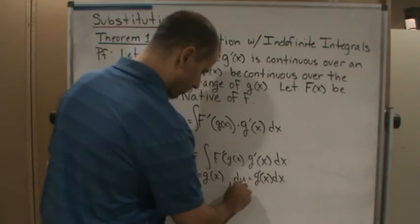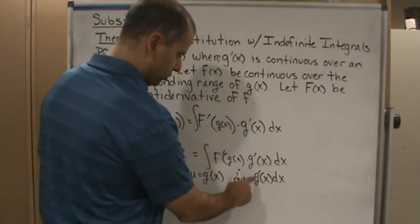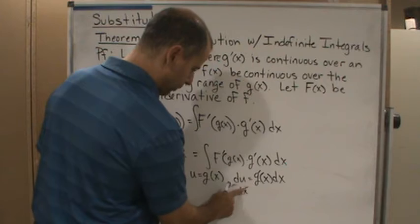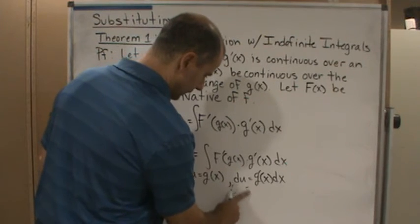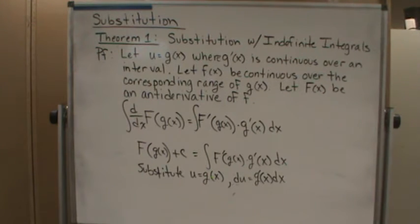Because we could write this as, remember, du/dx is equal to g prime of x. So if we just multiply both sides by dx, we get this expression. Okay, we've seen that before.